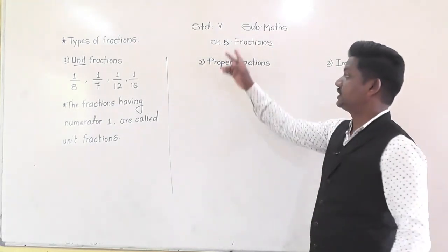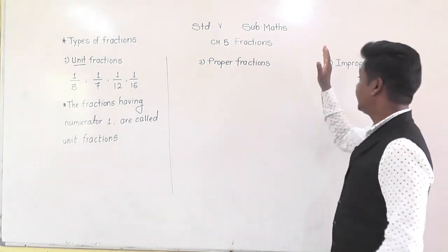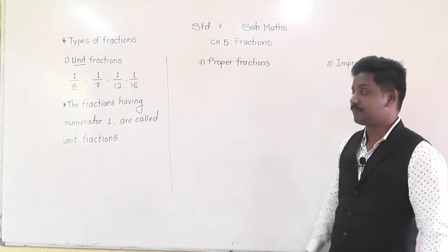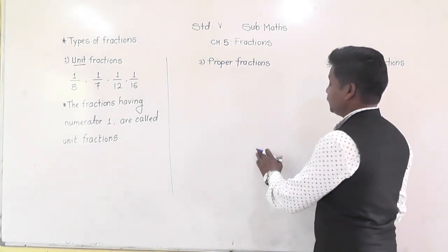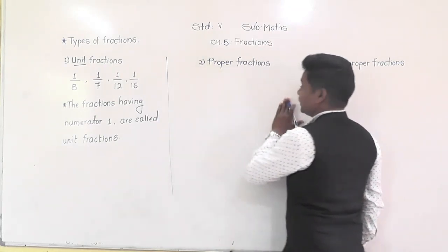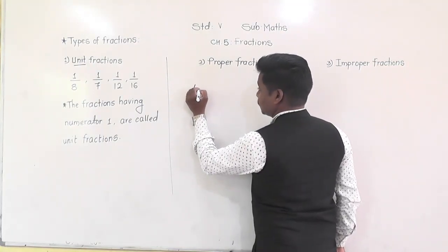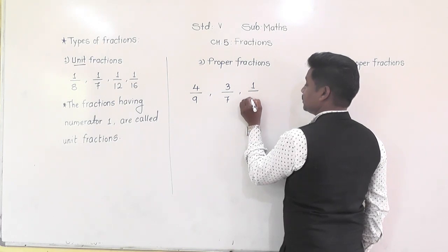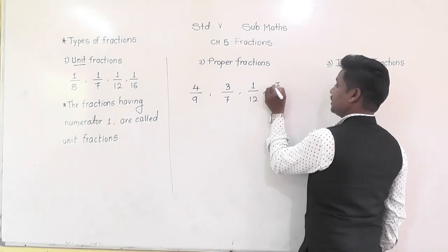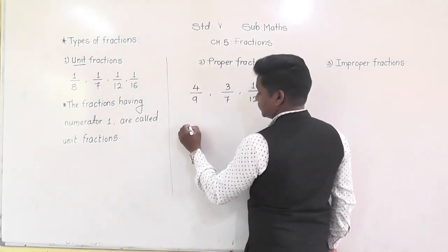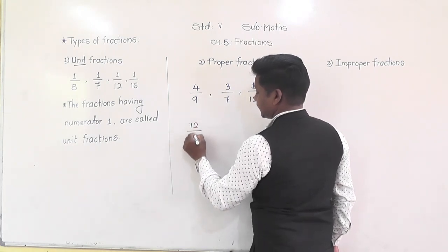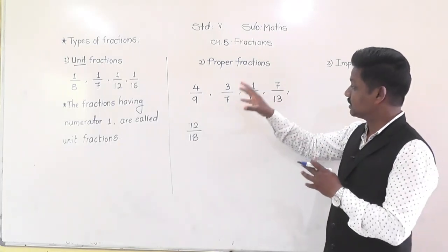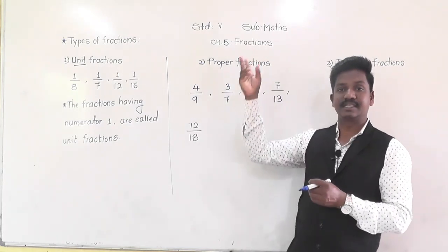The second type is proper fractions, and the third is improper fractions. These two are opposite to each other, so we will learn them together. First, we will learn what a proper fraction means. Here are some examples: 4 upon 9, 3 upon 7, 1 upon 12, 7 upon 13, 12 upon 18. Observe all these fractions and try to find something special by which we can say that yes, they are proper fractions.